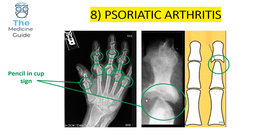This is a patient presenting with psoriatic arthritis. Psoriatic arthritis classically presents on an x-ray with a pencil and cup sign. Looking at the hand x-ray and the far right-hand side, you can appreciate this pencil and cup sign. This is a very high yield image that crops up quite often in medical school final exams.